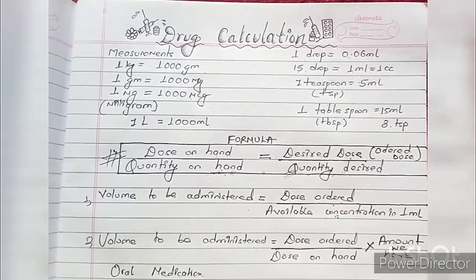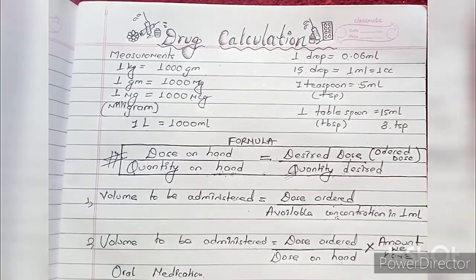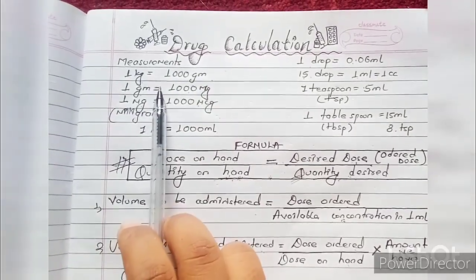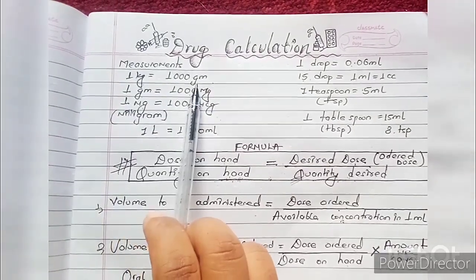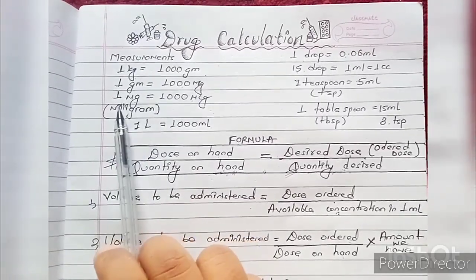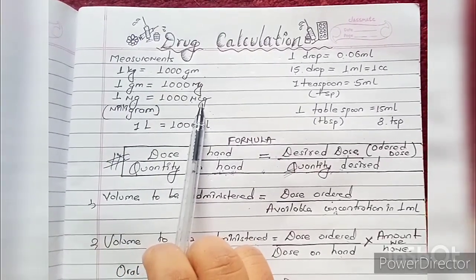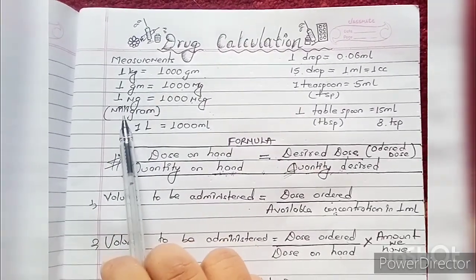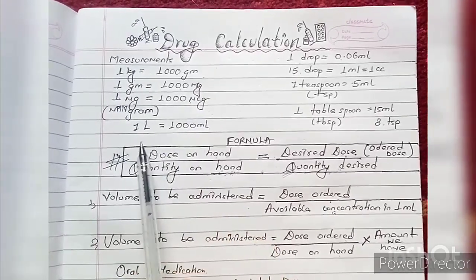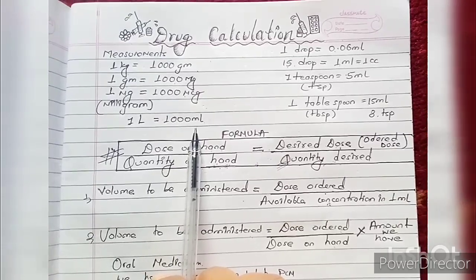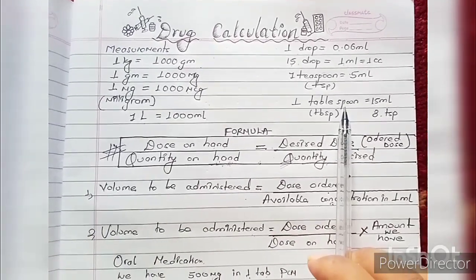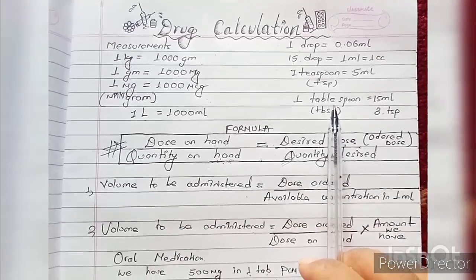Drug calculation requires measurement conversions. 1 kg equals 2000 g, 1 g equals 2000 mg, 1 mg equals 1000 mcg — mg is milligram and mcg is microgram — and 1 liter equals 1000 mL. This is how many liquid suspensions are available for drugs.